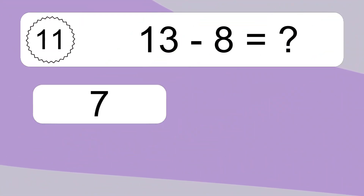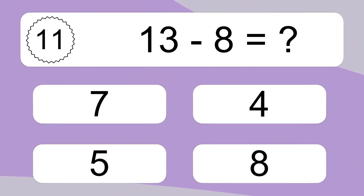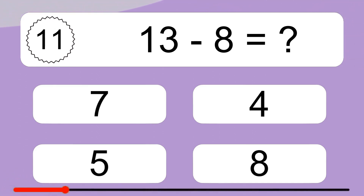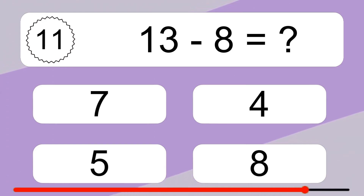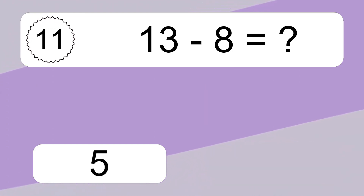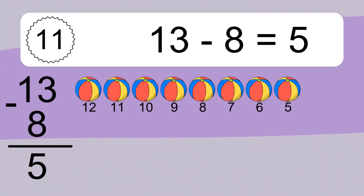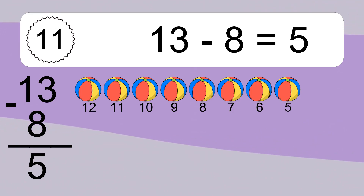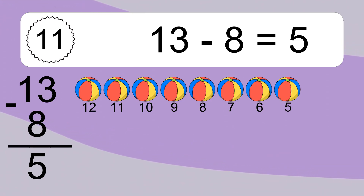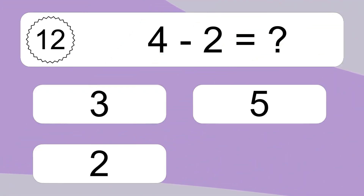13 minus 8 equals what? 13 minus 8 equals 5. Let's count it. 12, 11, 10, 9, 8, 7, 6, 5.